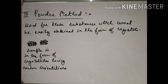As mentioned in a previous video about crystalline and amorphous forms, crystalline materials can be of two types: single crystal and polycrystal. Polycrystalline materials are made up of crystallites (also called grains), each having their own different orientation. So in the powder method, the sample is in the form of crystallites having random orientations.